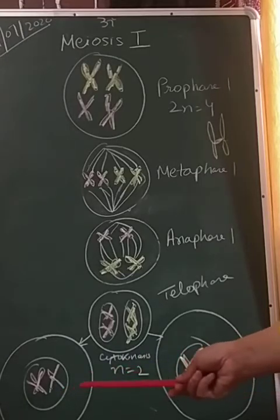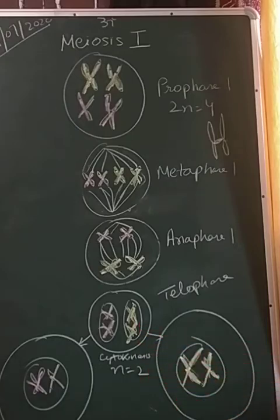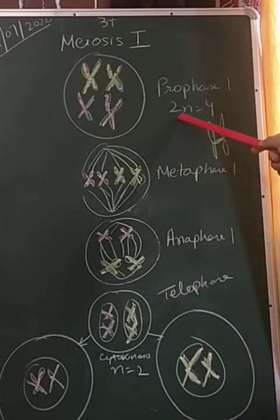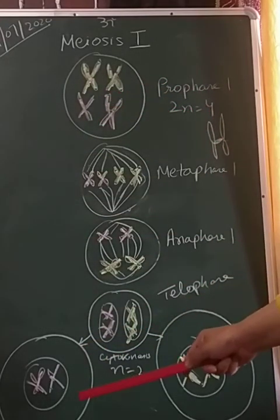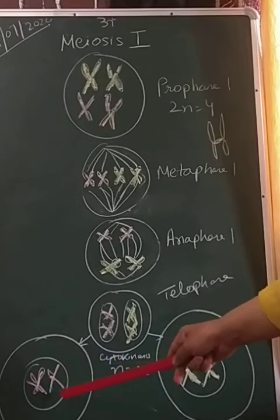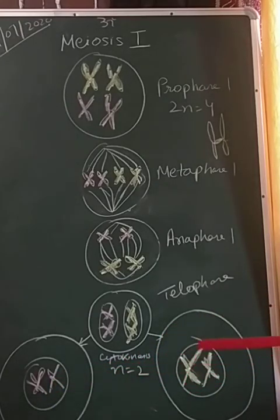We can see that two daughter cells are produced, and with these two daughter cells we proceed with meiosis two. It is called a reduction division because the chromosome number is halved — originally four chromosomes were there, but now it has been reduced from four to two in each cell.